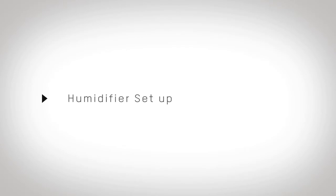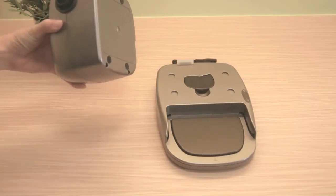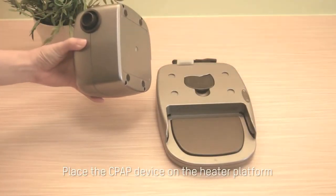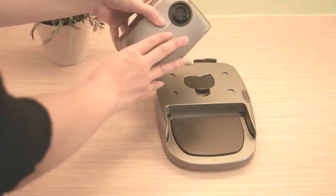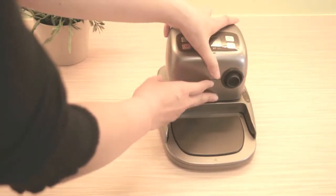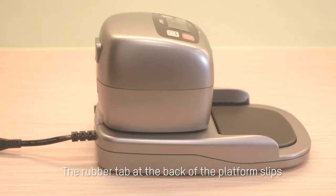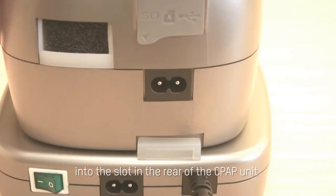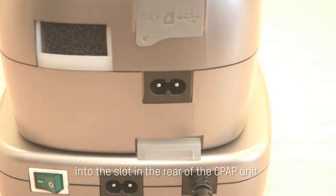Humidifier Setup. Place the CPAP device on the heater platform. The rubber tab at the back of the platform slips into the slot in the rear of the CPAP unit.